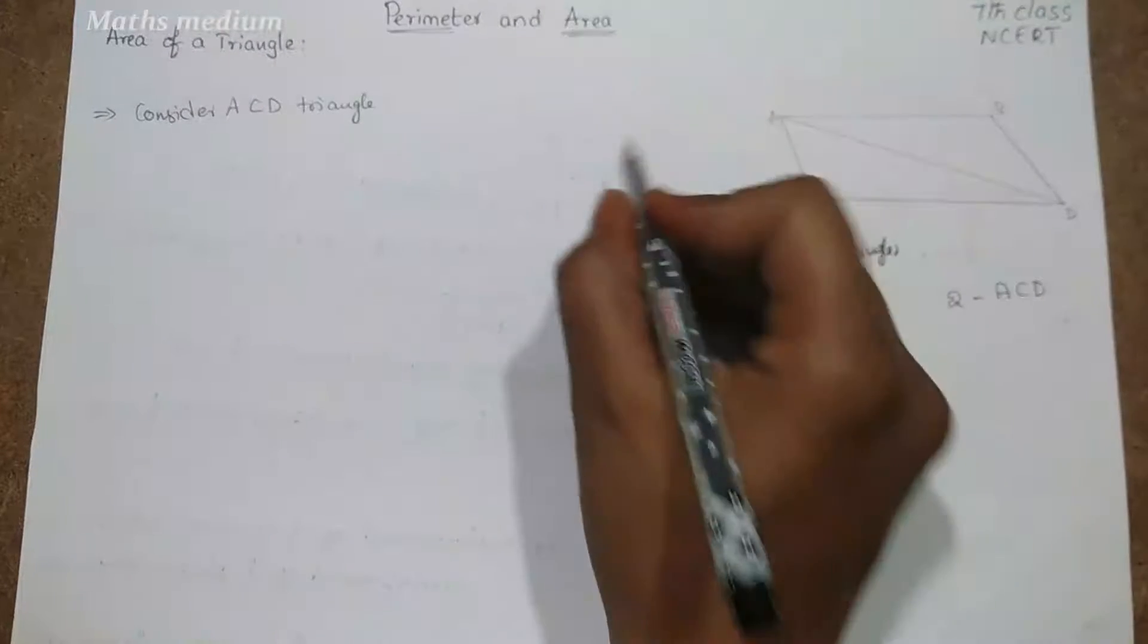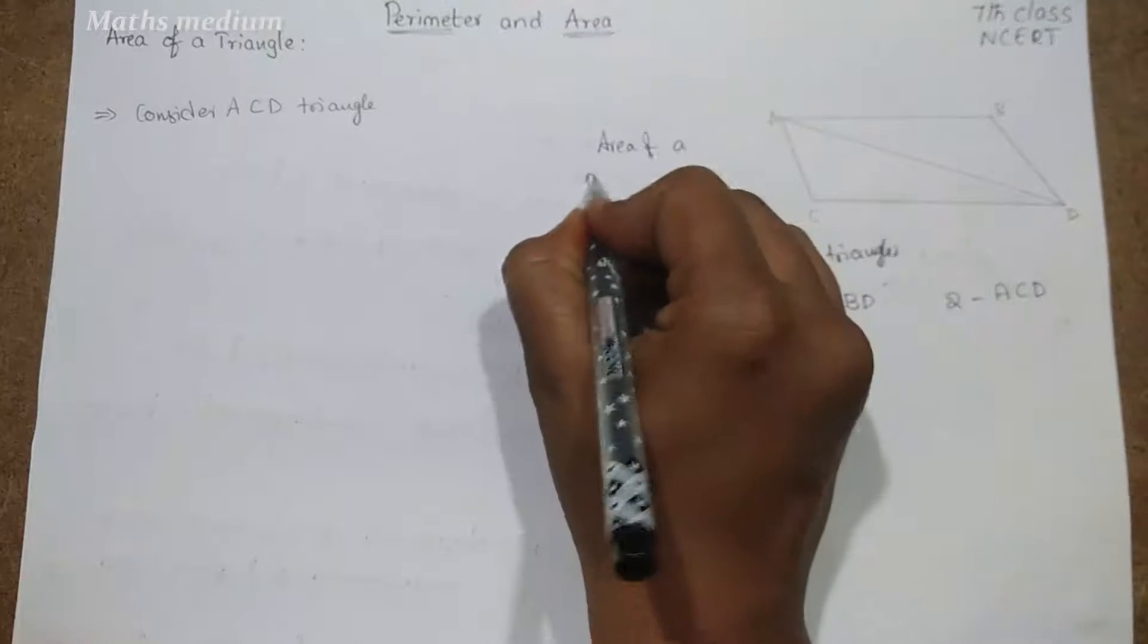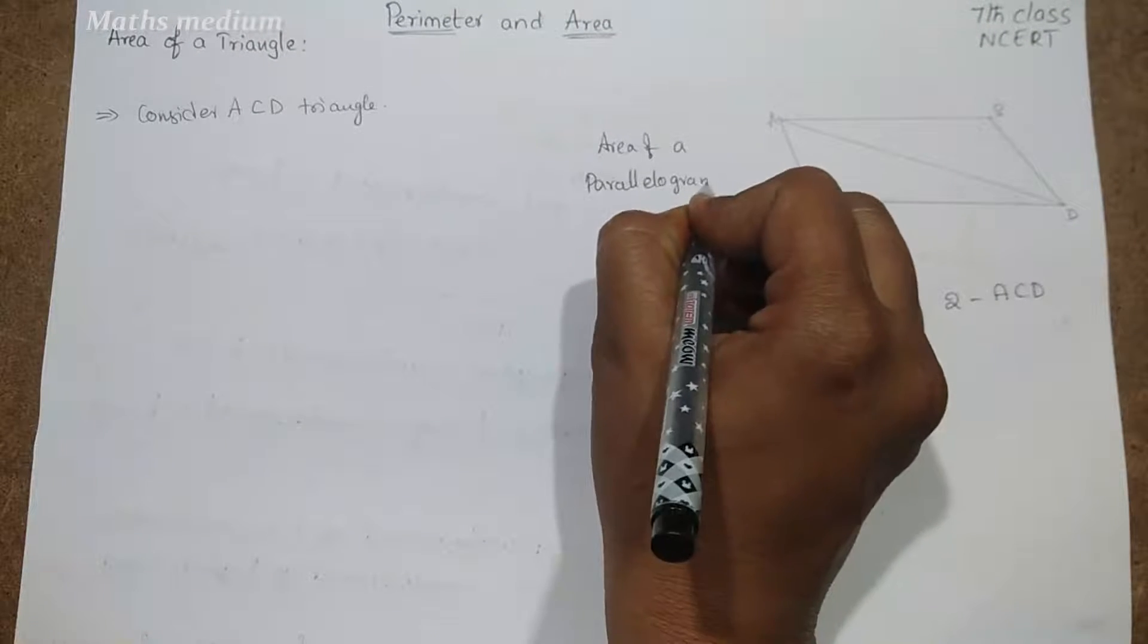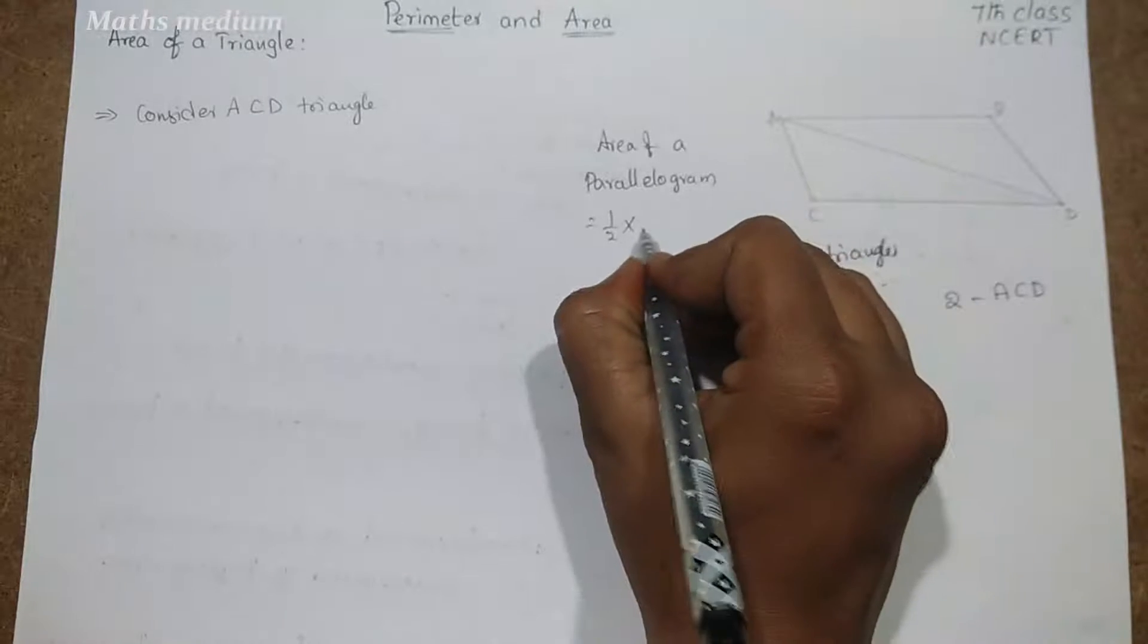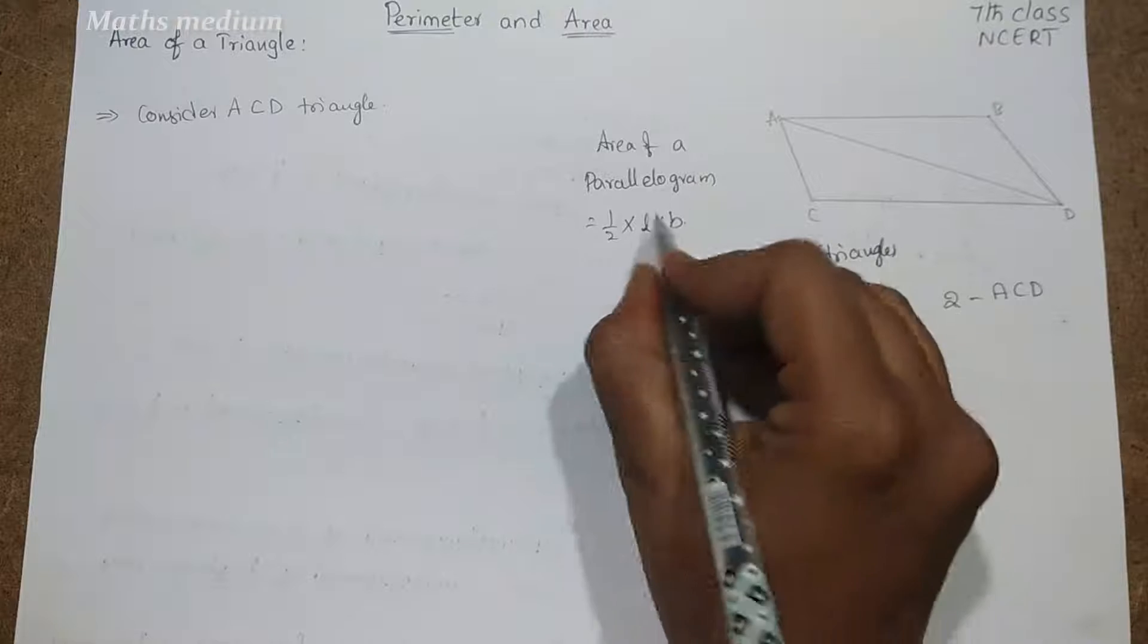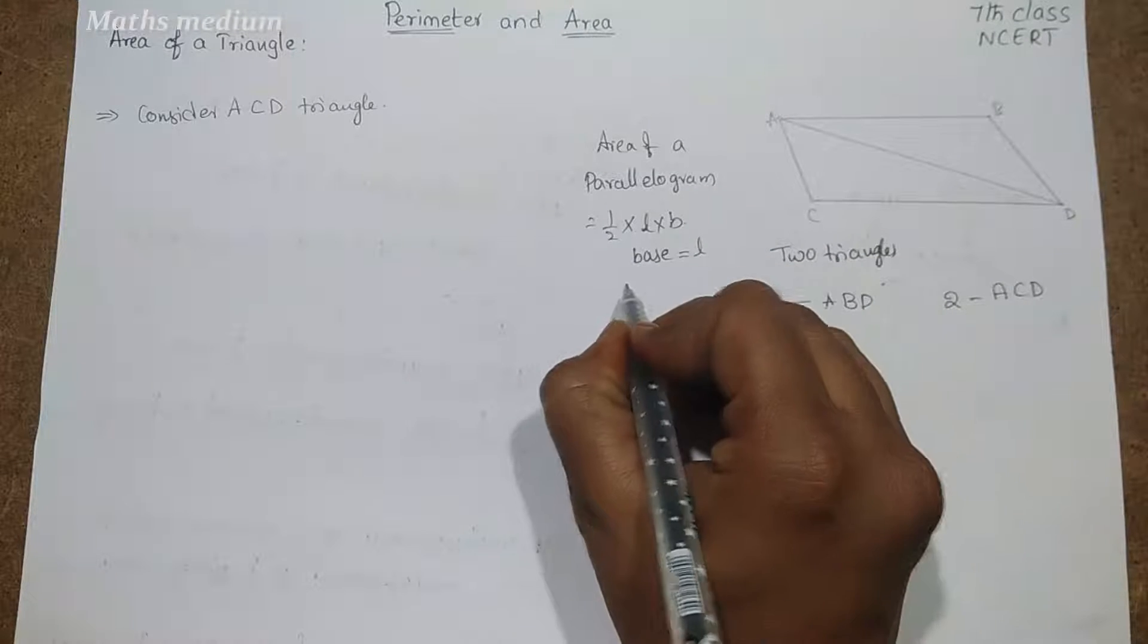In previous videos we already discussed what is the area of a parallelogram. So area of a parallelogram is equal to half into length into breadth. But what is length and breadth here? One is base equal to L and breadth.